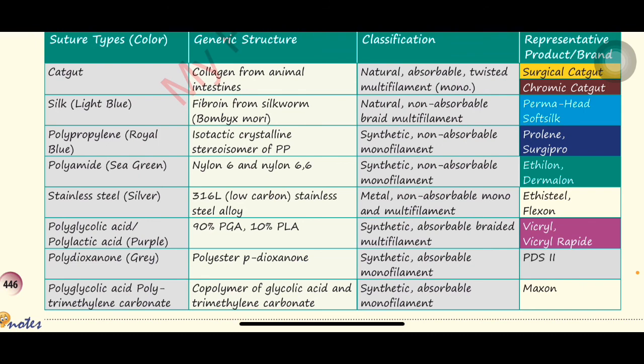Among all these, catgut, silk, polypropylene, and polydioxanone are the most important. Thank you for watching this video. For more videos, subscribe to Metuber.